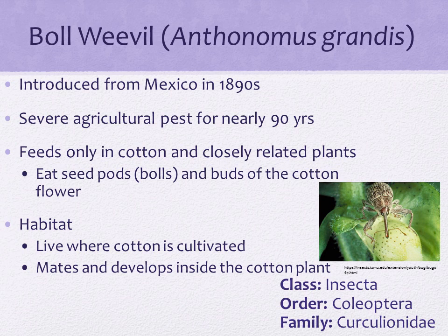The size of the mature boll weevil varies according to the amount of food it receives during its larval stage, but it averages about six millimeters, including the long curved snout, which is about one half the body length. Females deposit between about 100 to 300 eggs in cotton buds or fruit. An average of two to three weeks is required for an egg to develop into an adult, and there may be up to 10 generations each year. The larvae live entirely within the cotton boll, destroying not only the seeds but also the surrounding cotton fibers. Because the larvae and pupae remain inside the cotton bolls for their entire period of development, the application of insecticides at that time is ineffective.